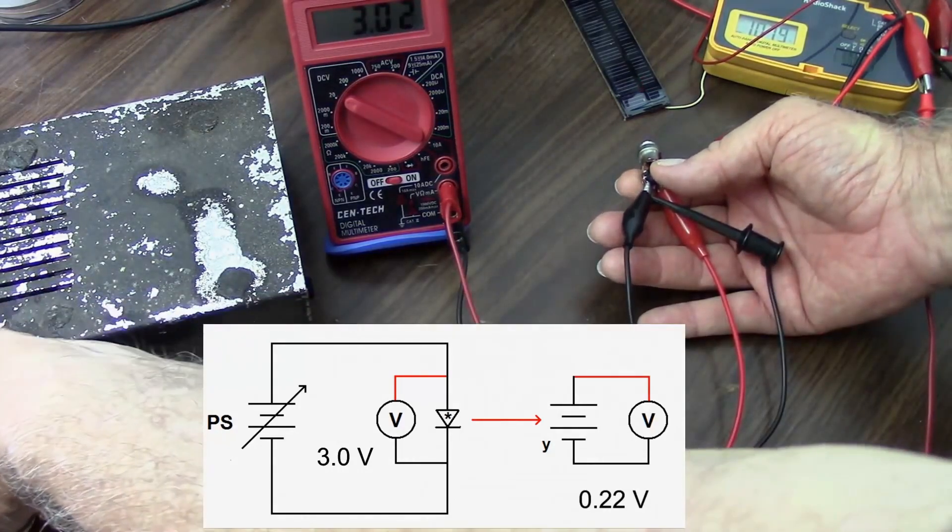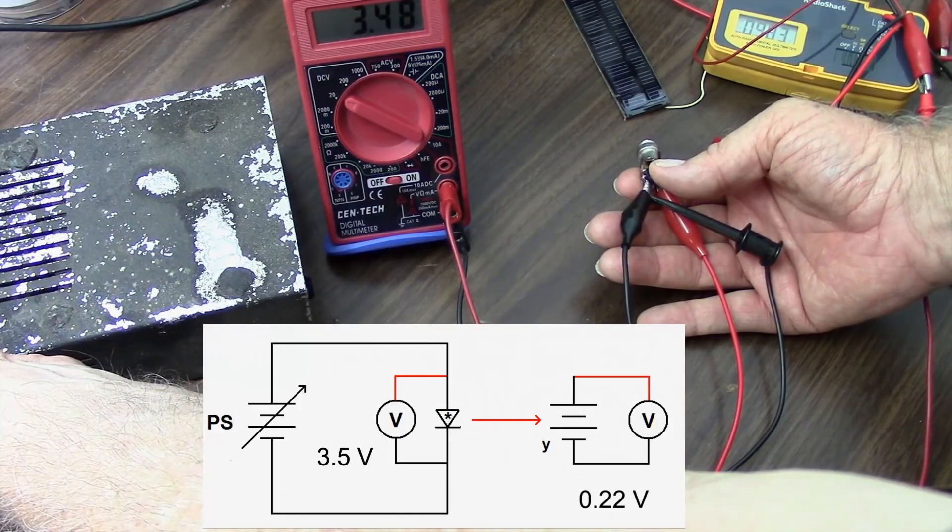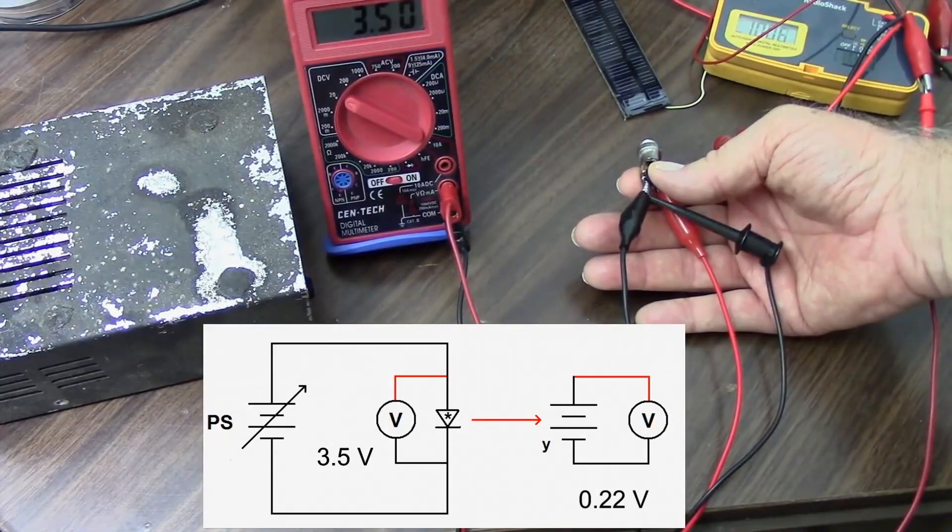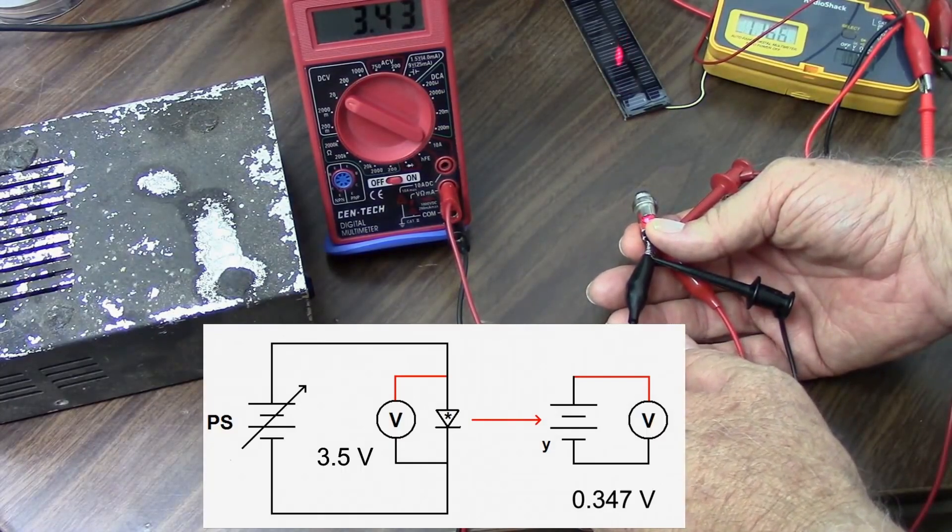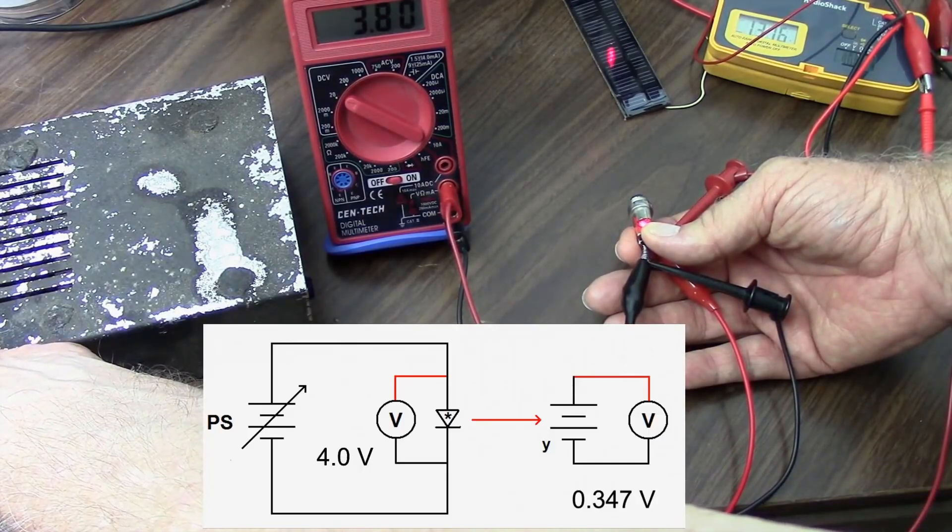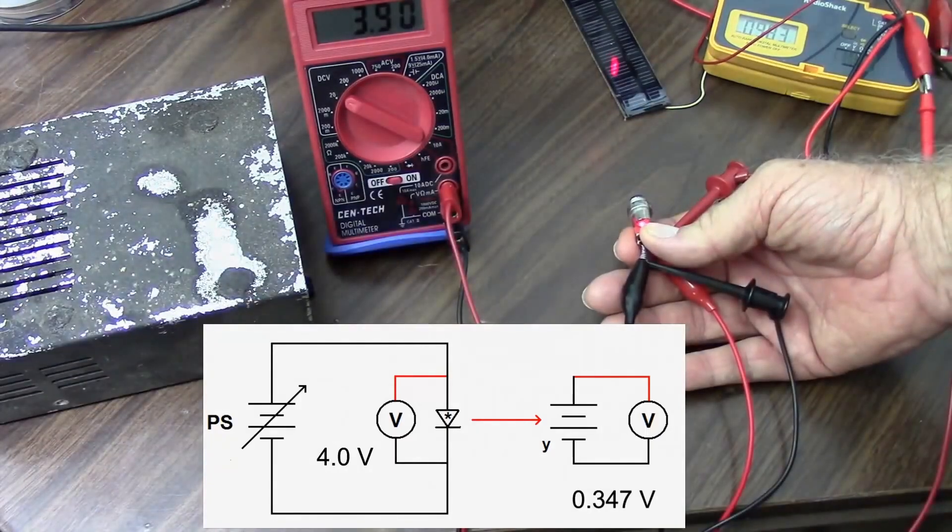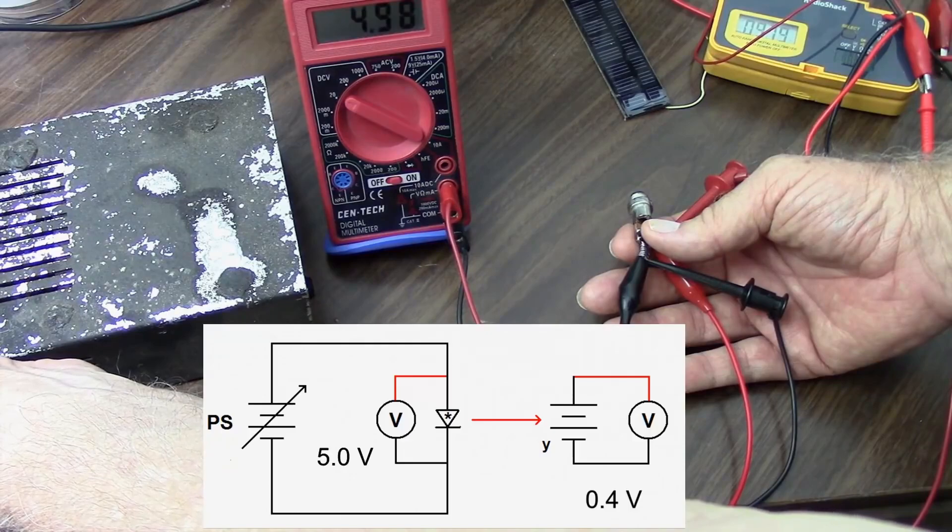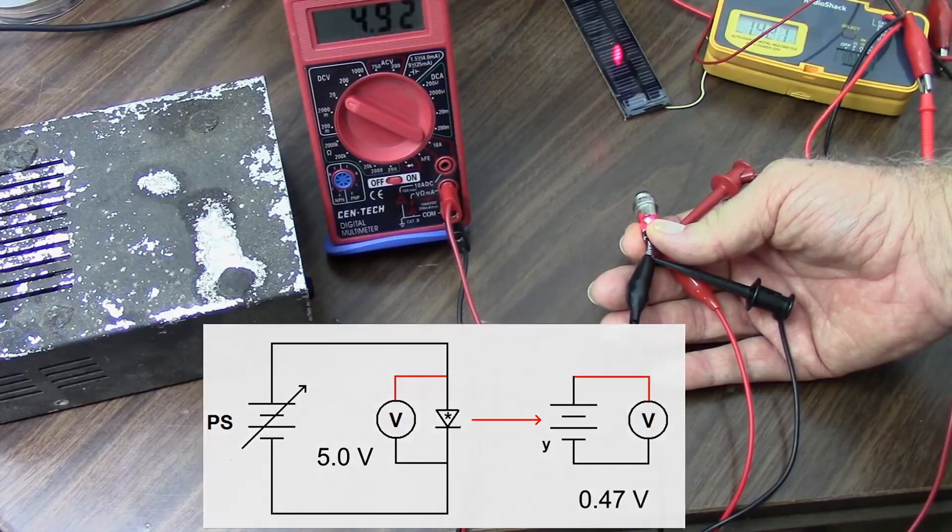So, then I cranked this up to three-point-five volts, holding my finger in the same place, shined it on the photo cell, and got about point-three-five volts off the photo cell. So, I cranked this up to four volts, and got about point-four volts off the photo cell. And did that all the way up to five volts, and got about point-four-seven volts.